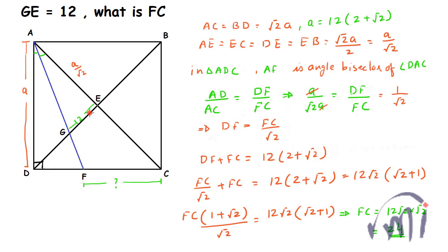So if GE is equal to 12, FC we have found to be equal to 24. Thank you Mr. Dinesh Changid and Mr. Sumit Saraswat for sending this problem. For many more interesting videos, keep watching and subscribe. Don't forget to press the notification bell so you get to know about new upcoming videos. Bye bye till then.